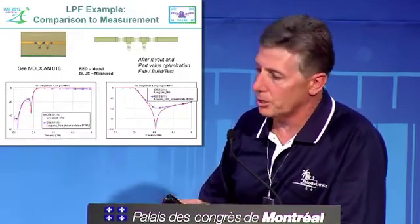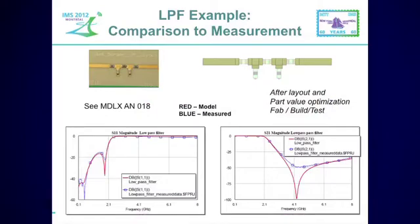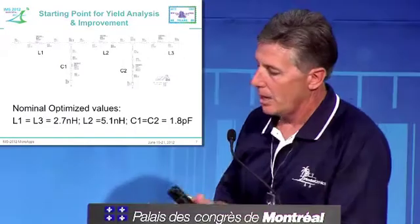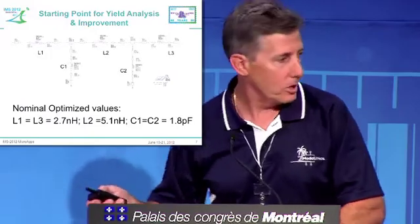To illustrate the nominal design, we built this filter using tight tolerance parts and got a very good first-pass result. This is what the layout looks like in AWR, and the nominal design is described in Application Note 18. The schematic for the simulation is shown here, with the nominal optimized part values listed: three inductor values and two specific capacitor values. From here I'll hand it off to my co-author for the rest of the presentation.